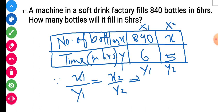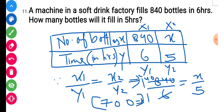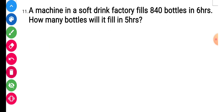Solving: 840 into 5 divided by 6 gives x. That equals 700. So 700 bottles will be filled in 5 hours. The answer is 700 bottles.